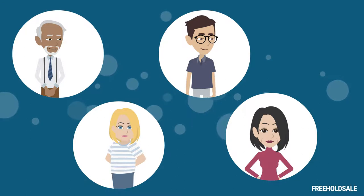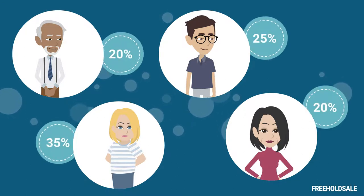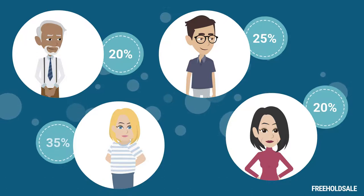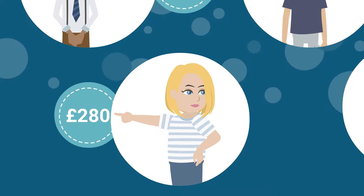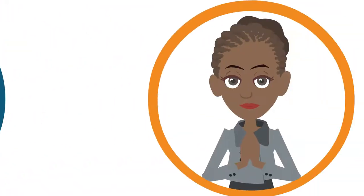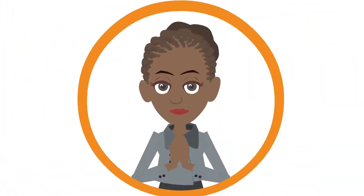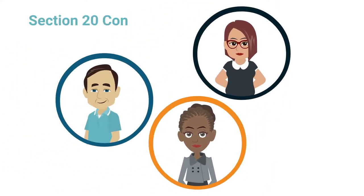The leases will determine the required contribution from each leaseholder to pay for such repairs and maintenance, and if the cost from any one leaseholder will exceed £250, the freeholder, immediate landlord, or building manager is required to notify the leaseholders via a Section 20 consultation.